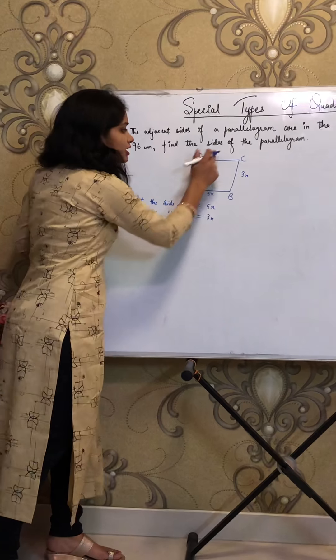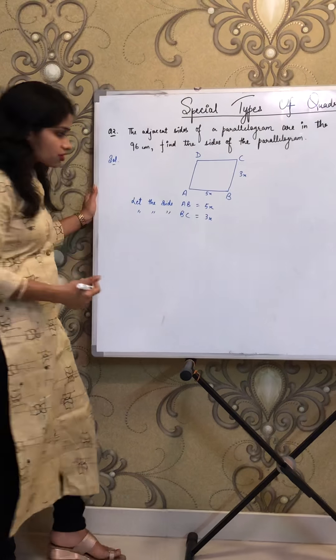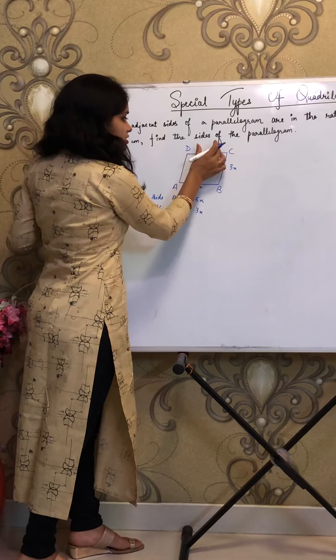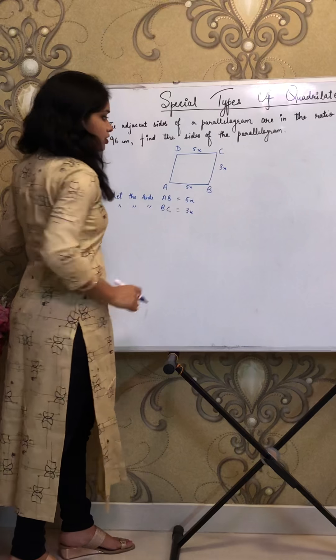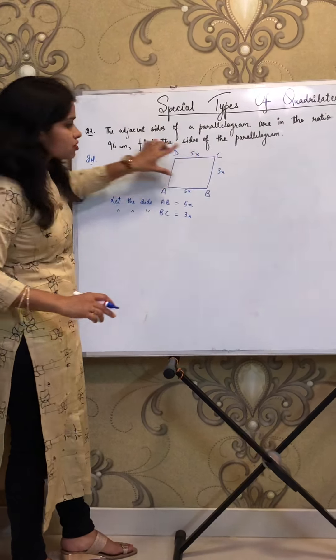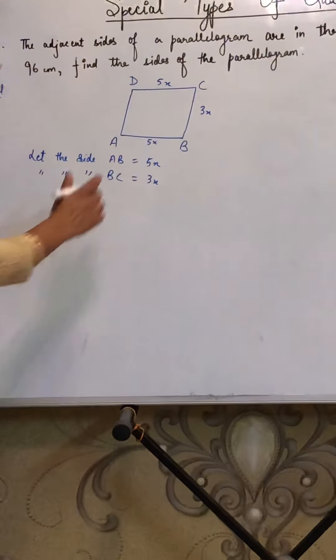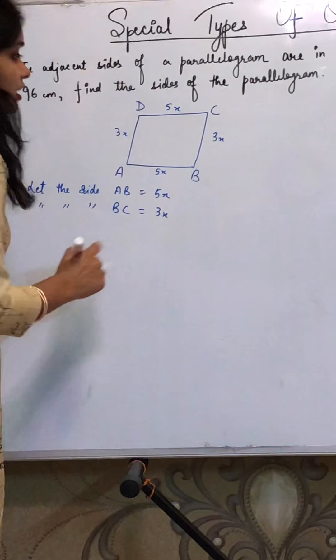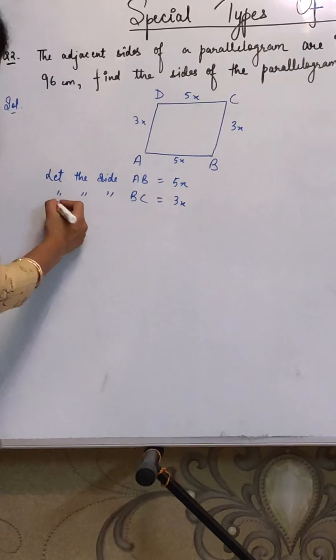Now in parallelogram, opposite sides are equal. So AB is 5X, CD is also 5X. Now BC is 3X, so AD will also be 3X. This I will write down also.